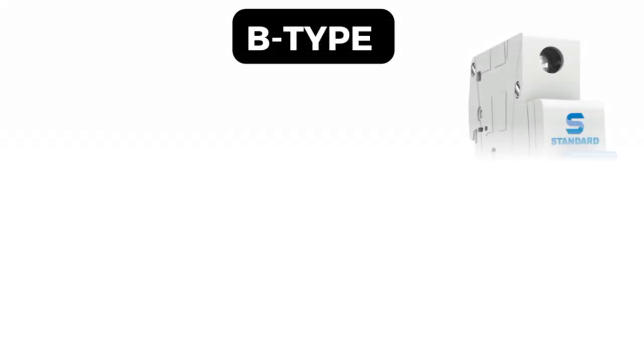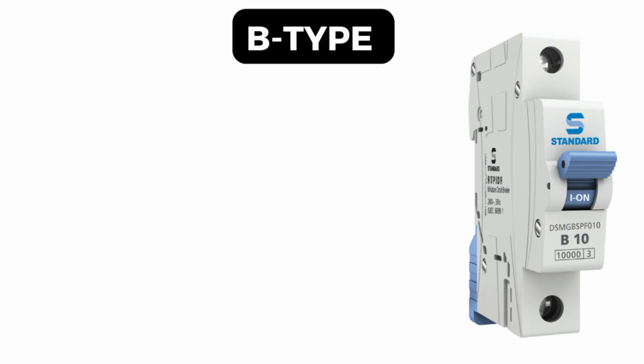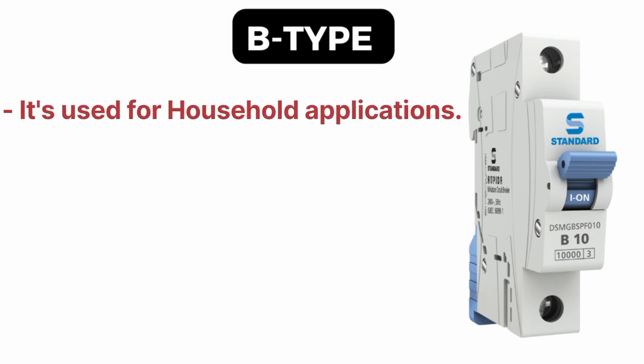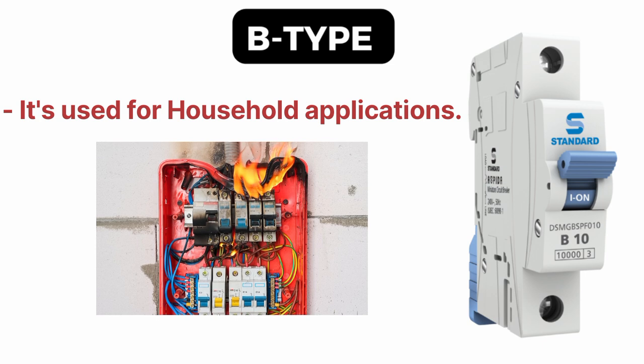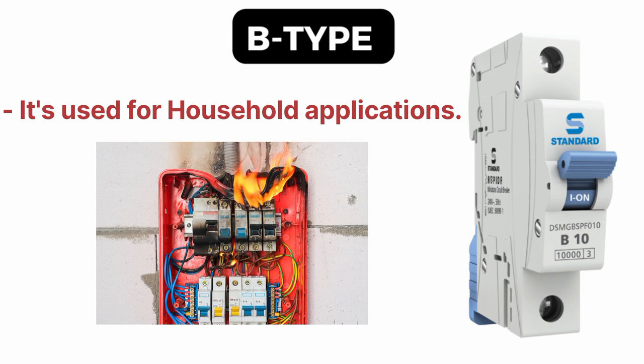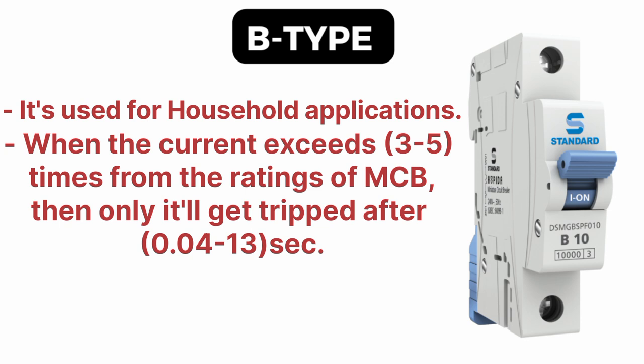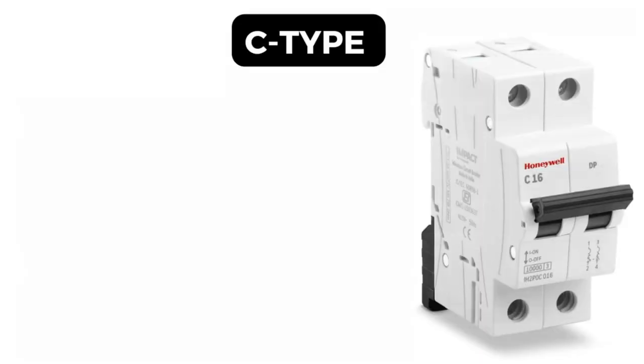Type B MCB is generally used for household applications. If you want to protect the electrical system from overload in our homes, we should use the Type B MCB. It gets tripped when the current exceeds 3 to 5 times the rating of the MCB, and it will trip after 0.04 to 13 seconds from the overload.